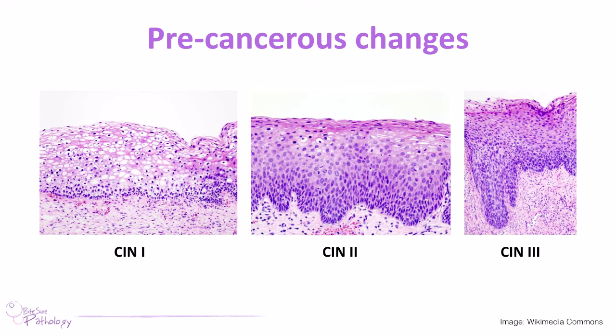CIN stands for cervical intraepithelial neoplasia. In grade 1 (CIN1), only the lower third of the epithelium is affected, showing an increased cell population. In CIN2, about two thirds of the epithelium is involved and we start to see nuclear irregularity and active cells. In CIN3, practically the whole epithelium is affected and the abnormal cells are starting to extend toward the basement membrane — though they haven't breached it. CIN3 is the highest grade and would be treated immediately.